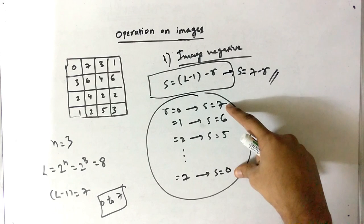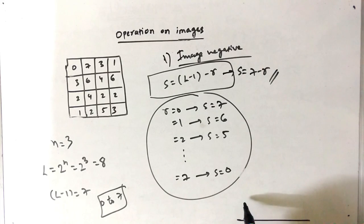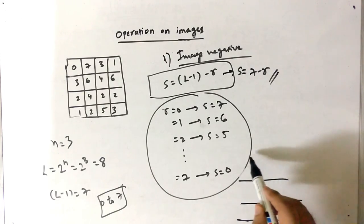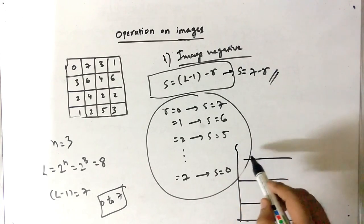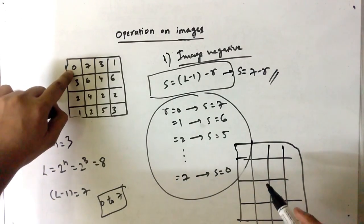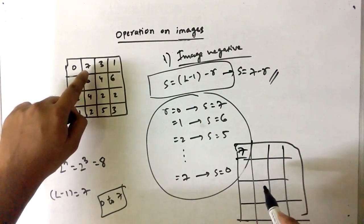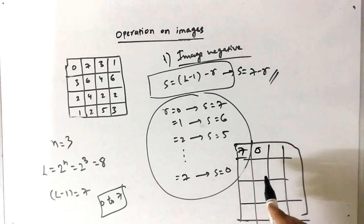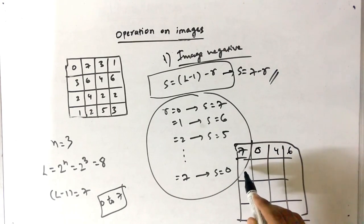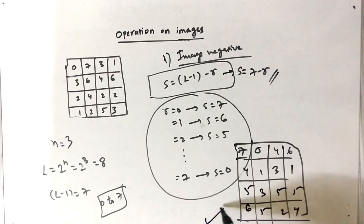The value of S is the modified value, so you just change the pixel accordingly. Wherever 0 is present, change it to 7. Wherever 7 is present, change it to 0, and so on. The resulting image negative is: 4, 1, 3, 1 — then 5, 3, 5, 5 — then 6, 5, 2, 4. This is the image negative operation on the given image.